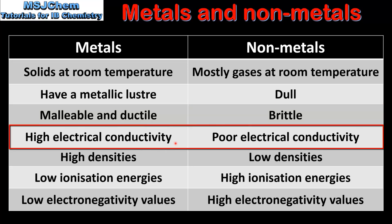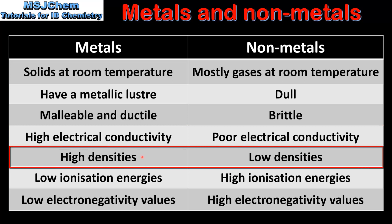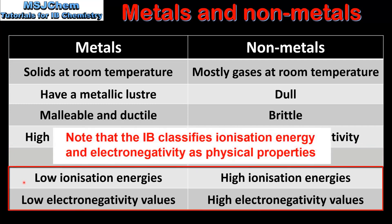Metals have high electrical conductivity, whereas non-metals have poor electrical conductivity. In terms of their densities, metals have high densities whereas non-metals have low densities. And finally, metals have low ionization energies and low electronegativity values, whereas non-metals have high ionization energies and high electronegativity values.